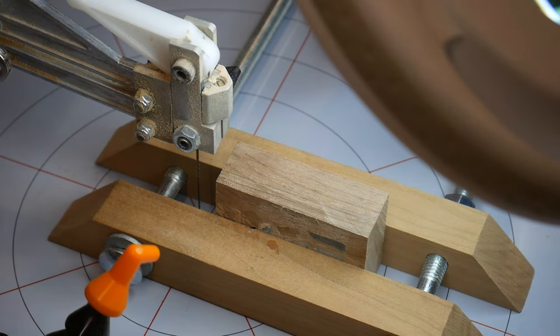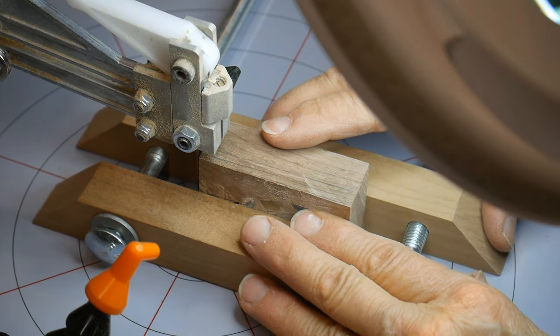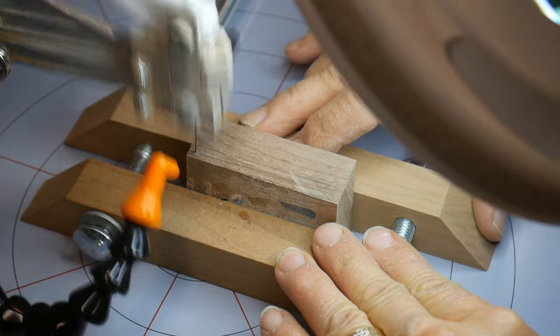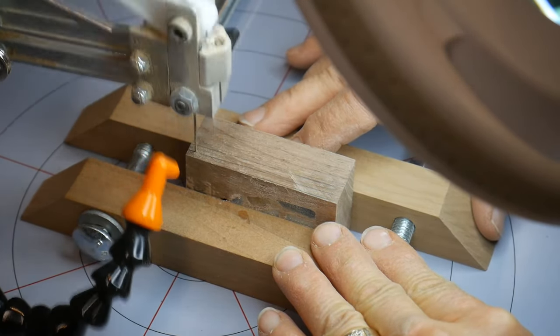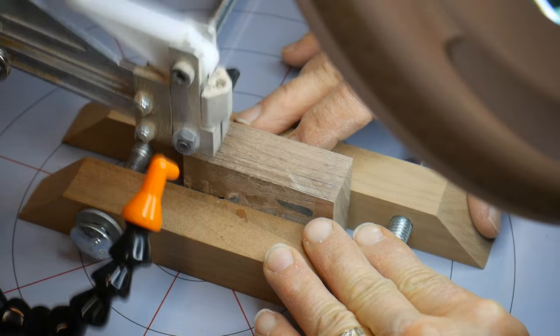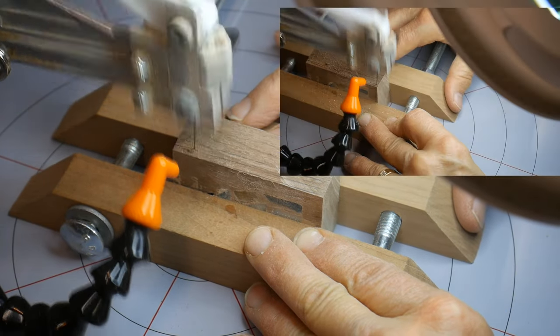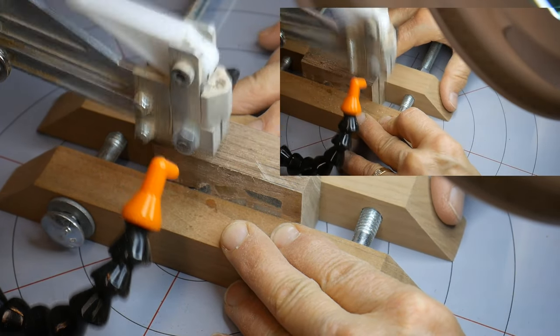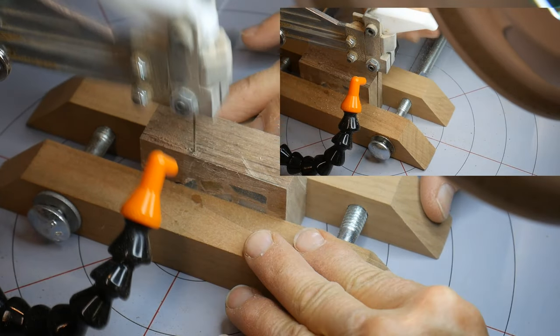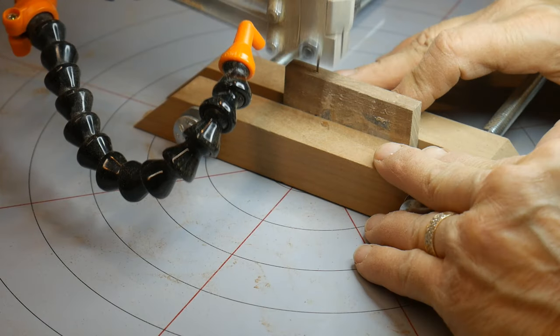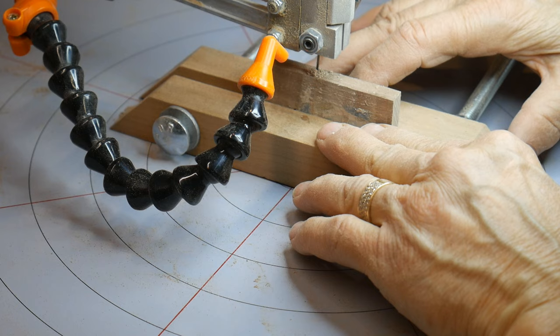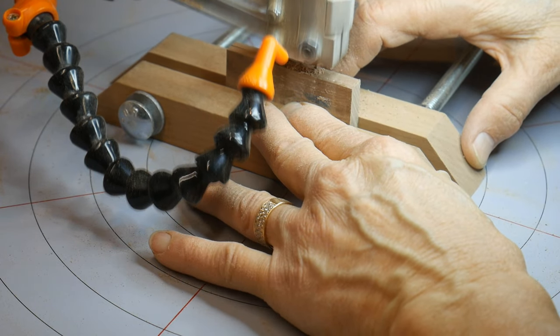I noticed my blade was getting a little dull so I stopped and changed it to a new blade. This clamping system really does hold the piece nice and firm and even when it got to that last slice when the piece was real thin it still did just fine.